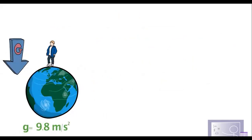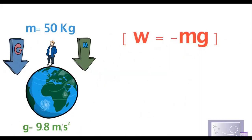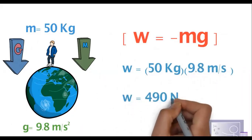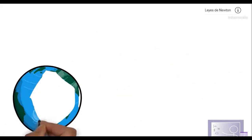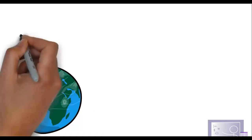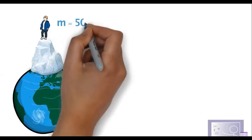Si tenemos una masa de 50 kilogramos, podemos calcular nuestro peso: peso es igual a masa por la gravedad. En los cálculos muchas veces se puede omitir el signo, y si pesamos 50 kilogramos, multiplicamos por la fuerza de gravedad 9.8 m/s². La aceleración de la gravedad nos da un peso de 490 newtons. Esto es justo a nivel del mar, donde se establece la aceleración gravitacional de 9.8 m/s². Pero si nos vamos a la cima del Everest, al estar más alejados del centro de la Tierra, la fuerza de gravedad ya cambió.